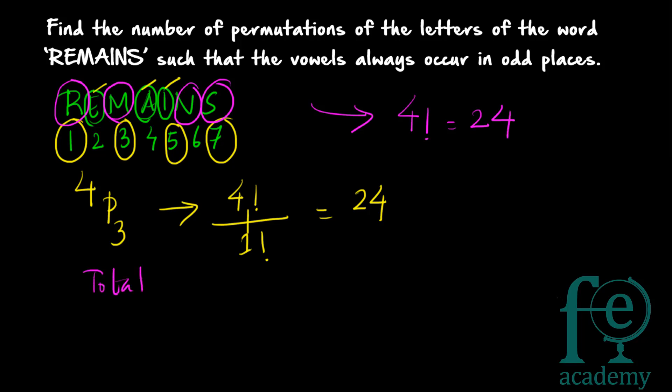So the total number of ways possible equals 24 × 24 = 576. You can arrange the vowels in 24 ways and the consonants in 24 ways, giving a total of 576 ways to arrange the letters of the word REMAINS. Thank you for watching.